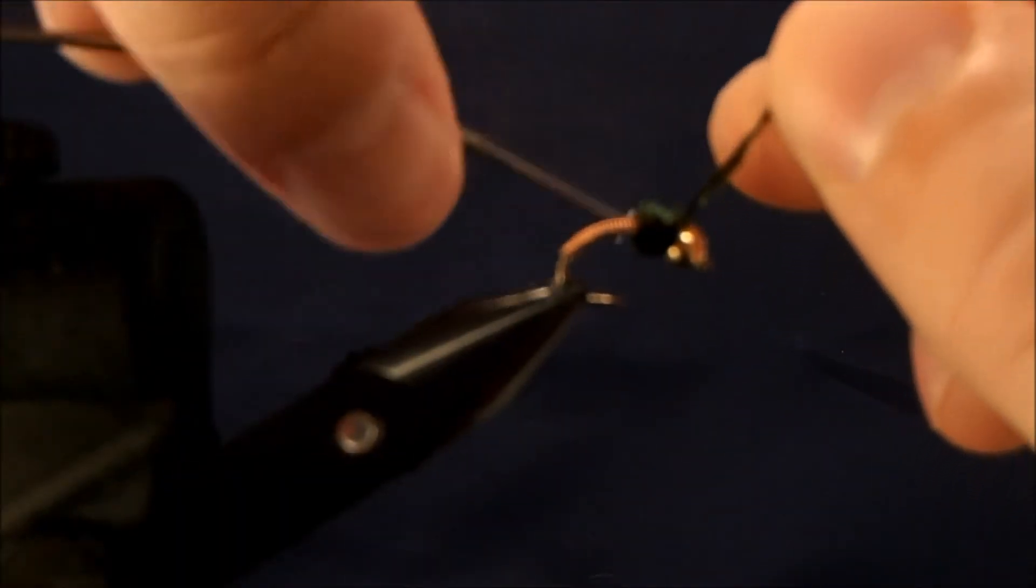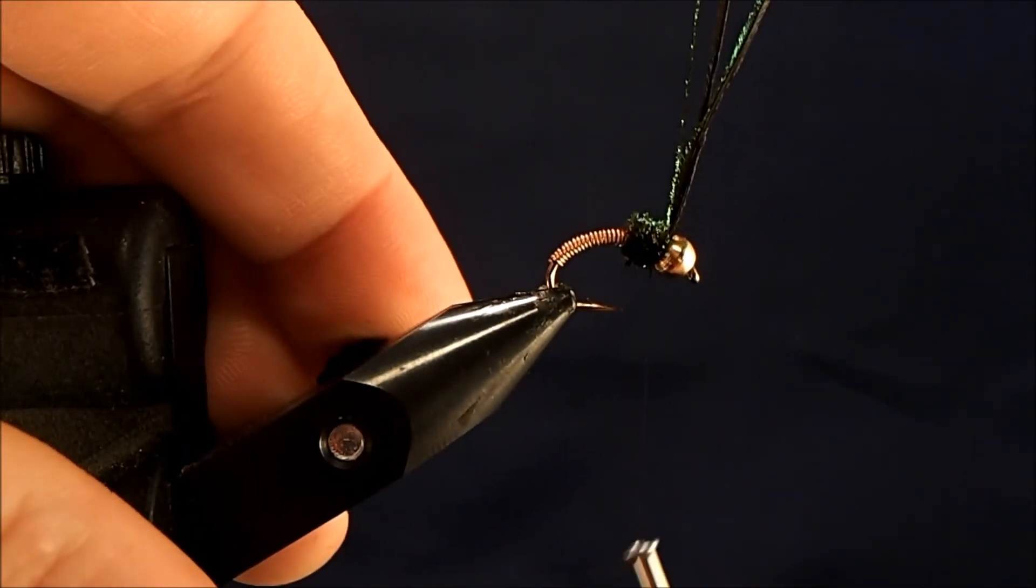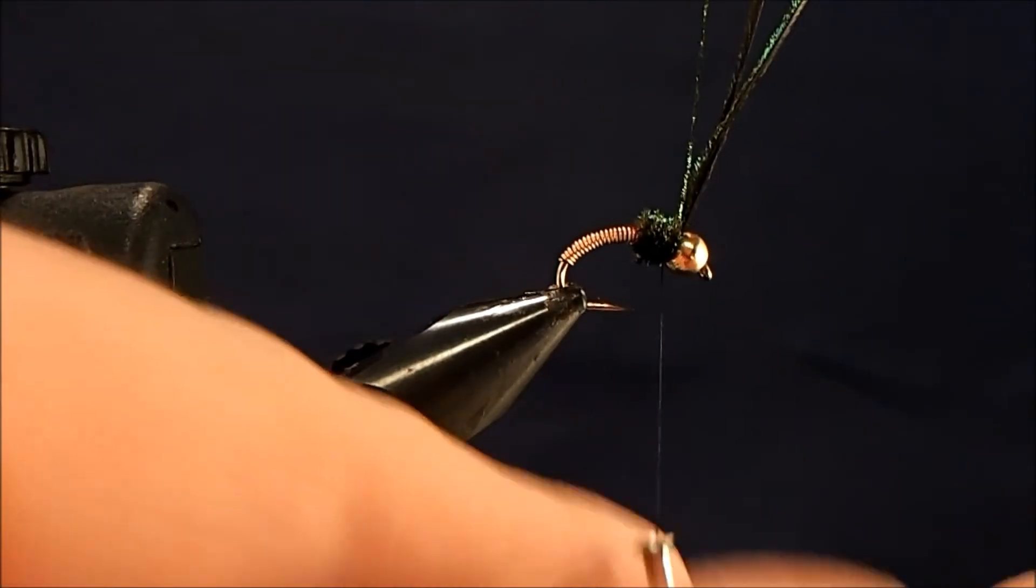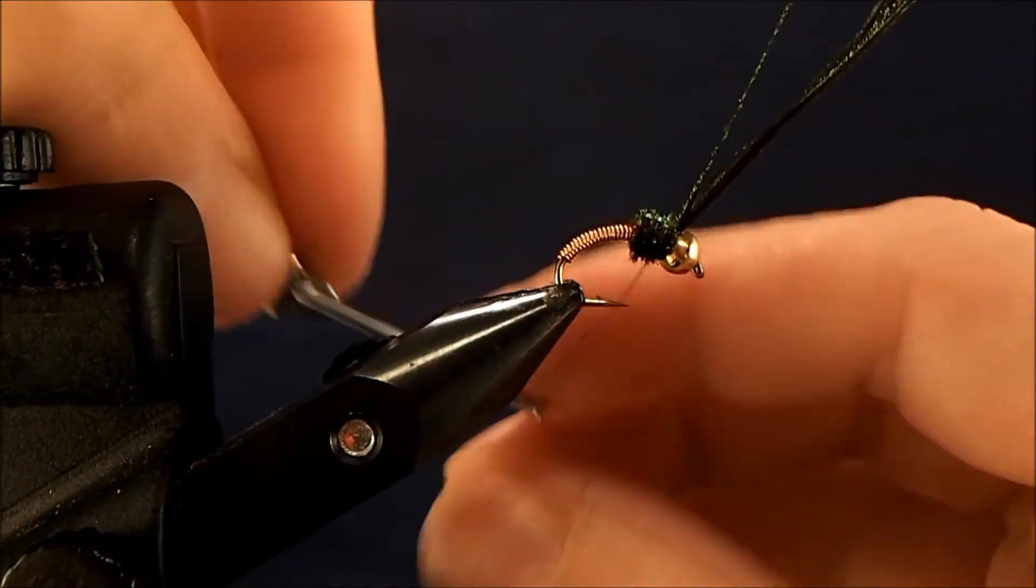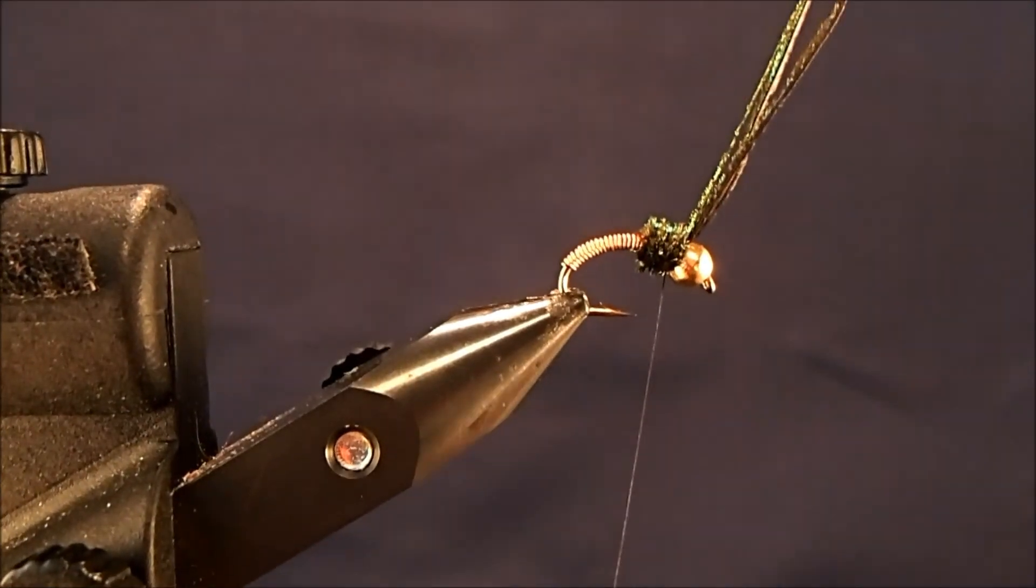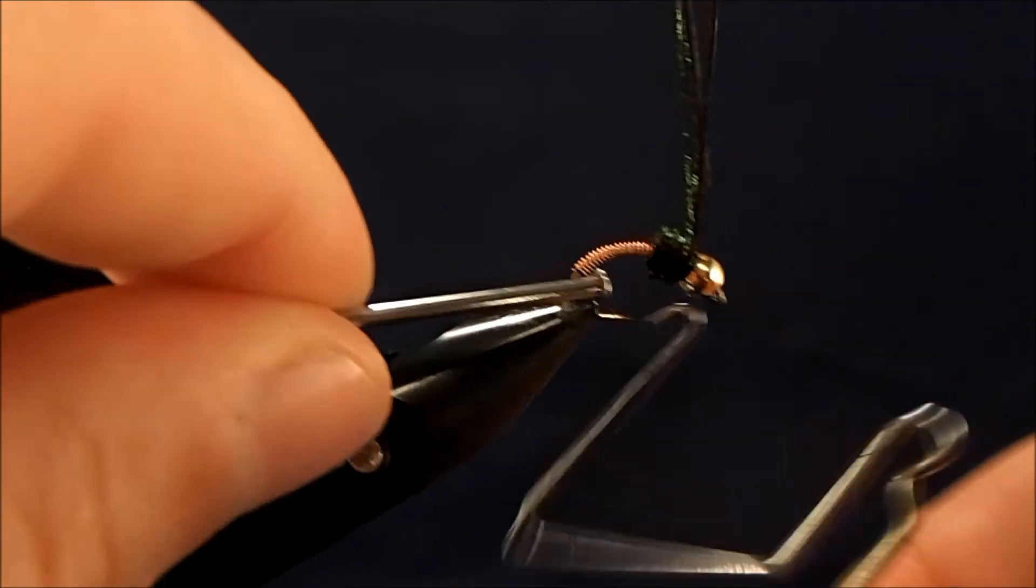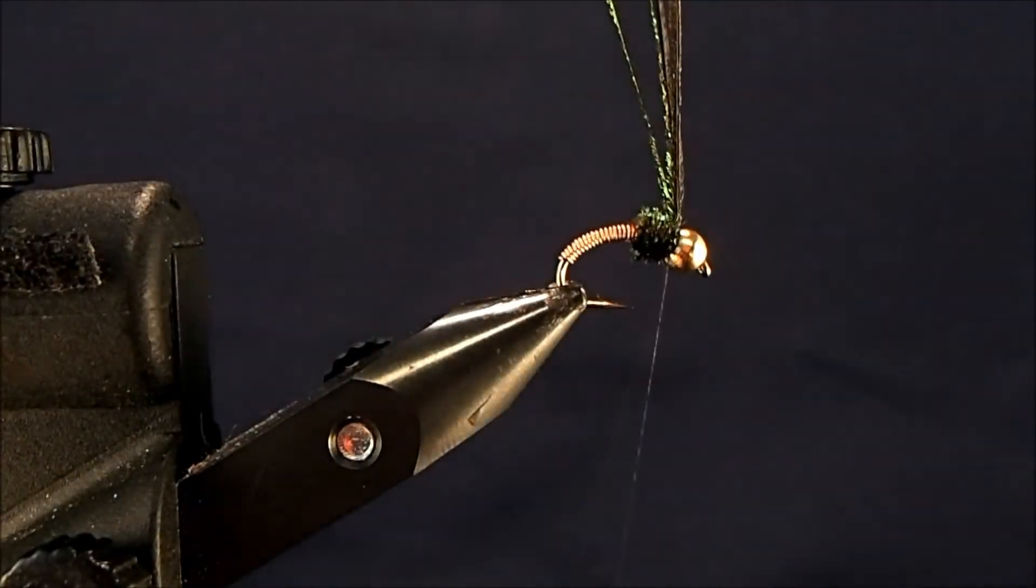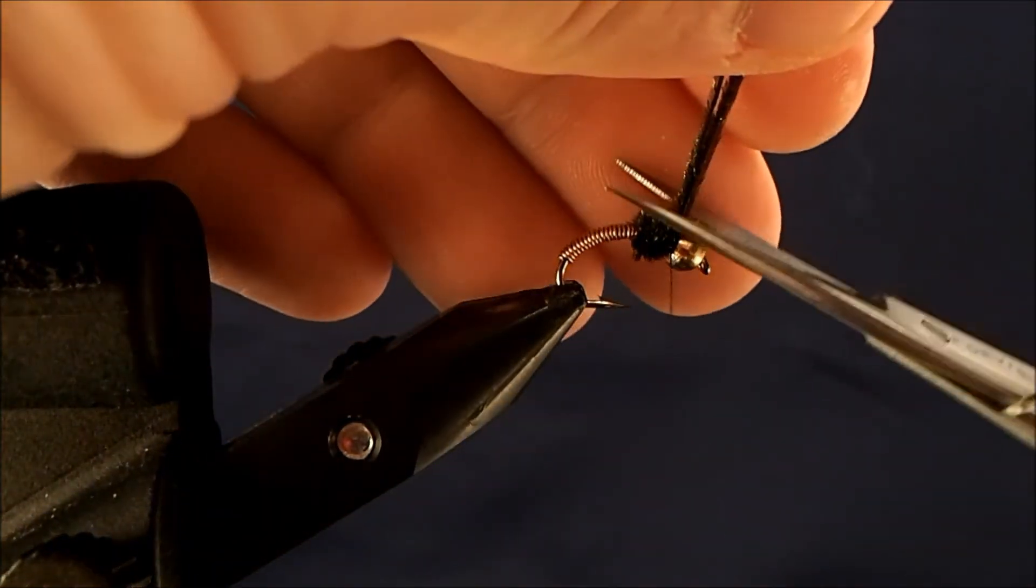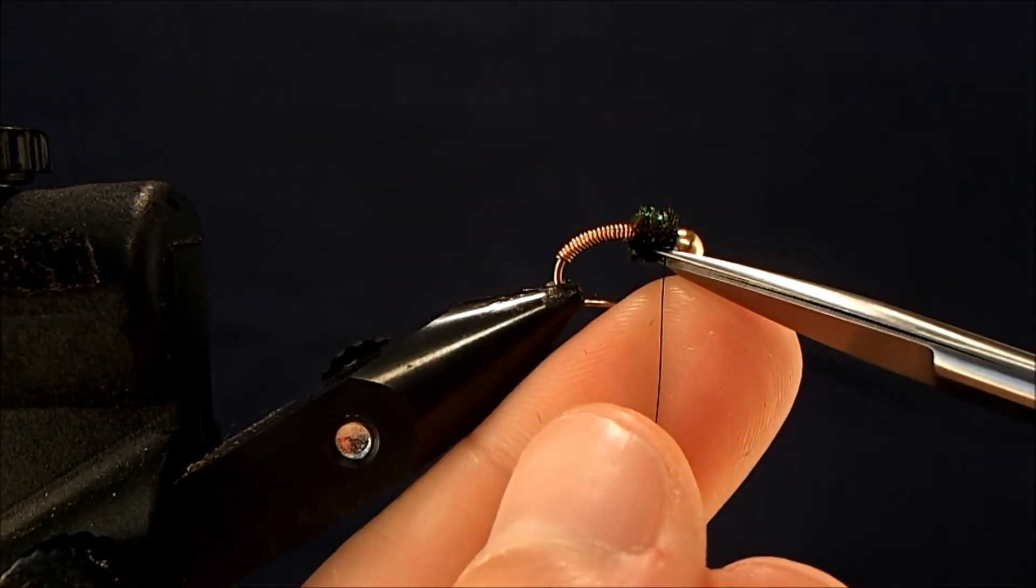When it's as thick as I want it to be, I'll just make a couple of securing wraps. Tie it all together with whip finishes, and then I'll clean everything up - take off the hurl and finish off the thread.